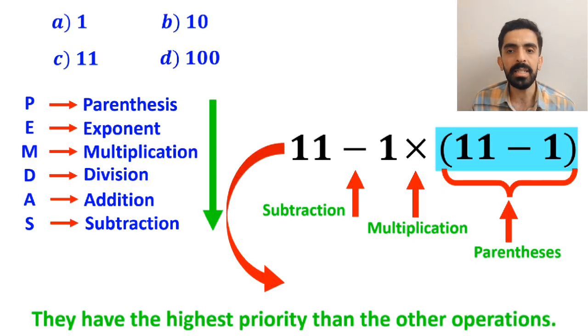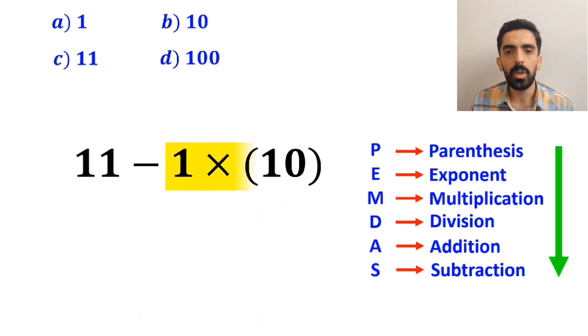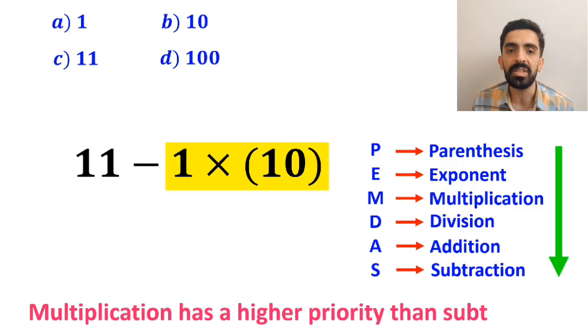So we can rewrite this expression as 11 - 1 × 10. In the next step, we move on to the multiplication between 1 and 10, because multiplication has a higher priority than subtraction.